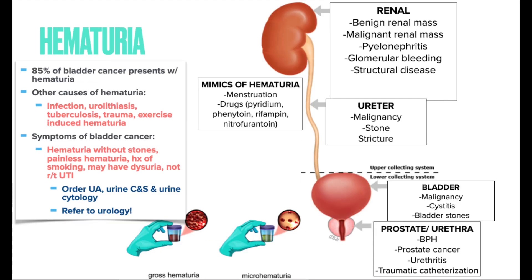Hematuria has many causes, but bladder cancer must be on your radar. 85% of bladder cancer presents with hematuria. Symptoms of bladder cancer include hematuria without stones, painless hematuria, history of smoking, and dysuria not related to a UTI. Order a UA, urine culture, and urine cytology, and refer to urology. Other causes of hematuria include infection, stones, TB, trauma, and exercise-induced hematuria.